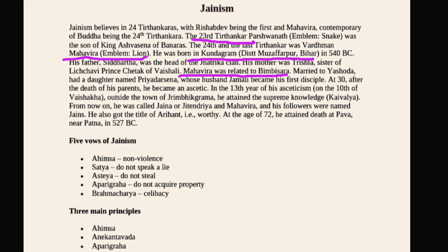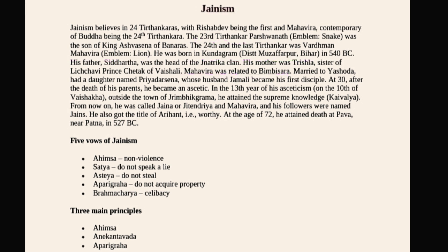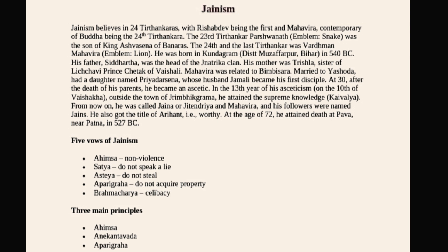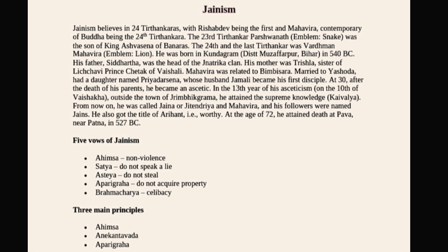Mahavira was born in Kundagram, Muzaffarpur, Bihar in 540 BC. His father Siddhartha was the head of the Jnatrika clan. His mother Trishla was the sister of Licchavi prince Chetak of Vaishali. Mahavira was related to Bimbisara. He married Yashoda and had a daughter named Priyadarshna, whose husband Jamali became his first disciple.